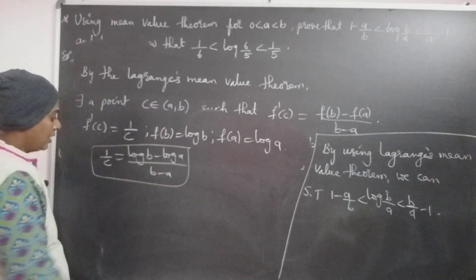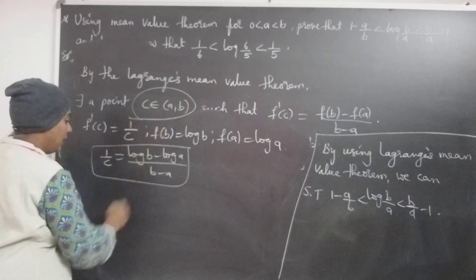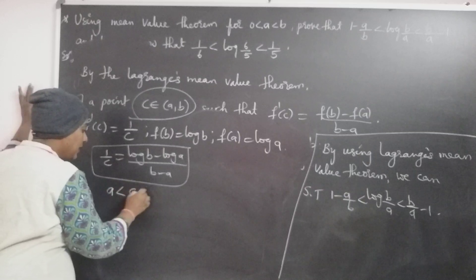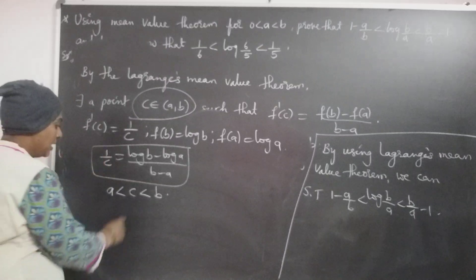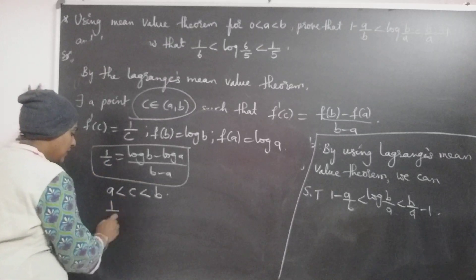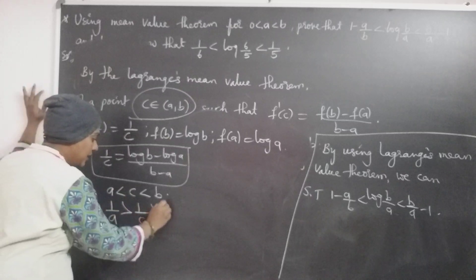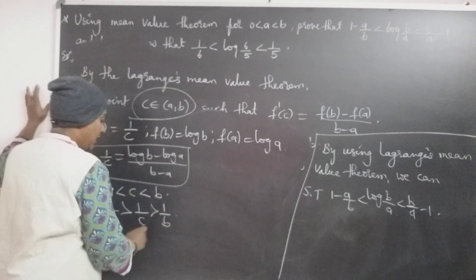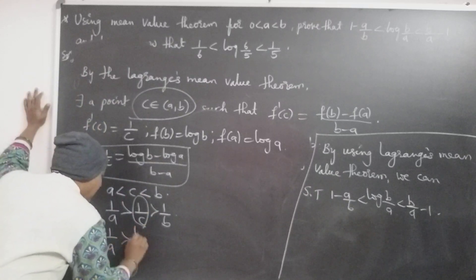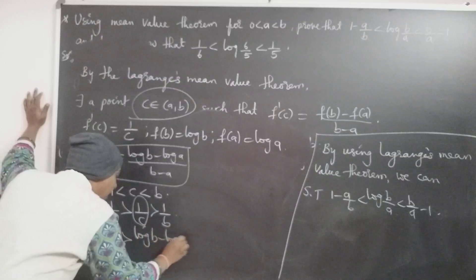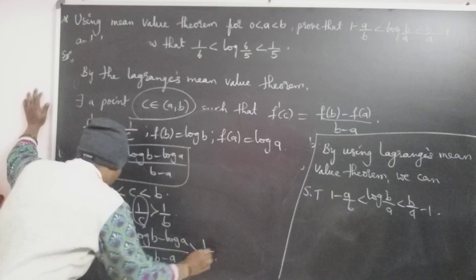This gives a relation between c and a, b. By the theorem, c belongs to open interval (a, b), so a < c < b. Taking reciprocals, the inequality reverses: 1/a > 1/c > 1/b. Substituting 1/c = (log b - log a)/(b - a), we get: 1/a > (log b - log a)/(b - a) > 1/b.